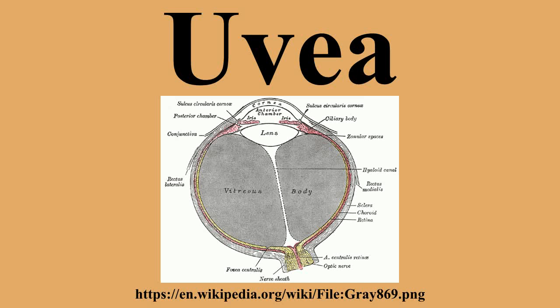Structure and regions: The uvea is the vascular middle layer of the eye. It is traditionally divided into three areas from front to back: the iris, ciliary body, and choroid.